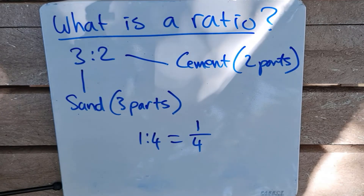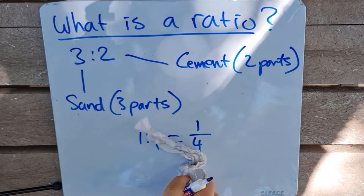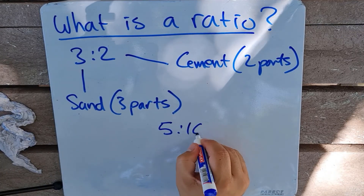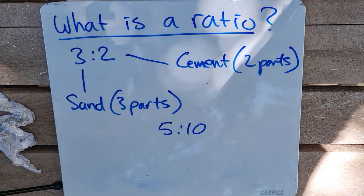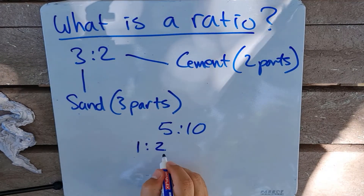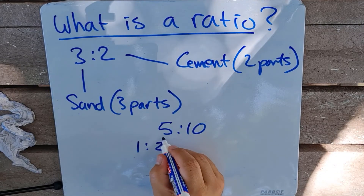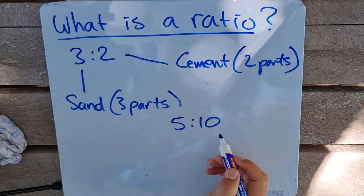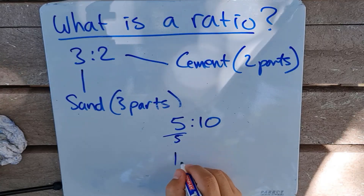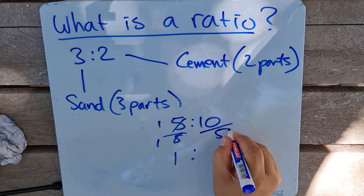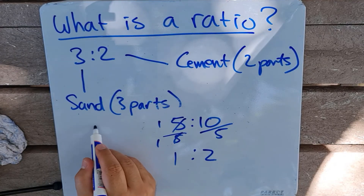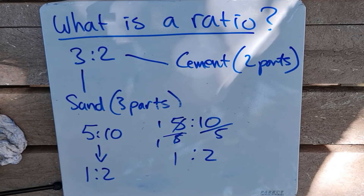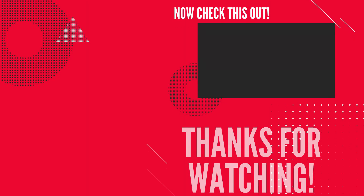For example, the ratio of a boys school is five to ten. Then the ratio in its simplest form would be one to two, after dividing both sides by five. If I divide by five, that becomes one over one which is one, and I divide ten by five that becomes two. So the ratio of five to ten in its simplest form is a ratio of one to two.